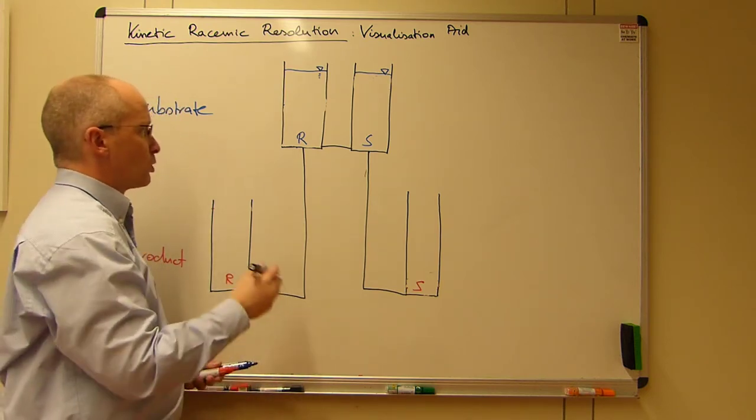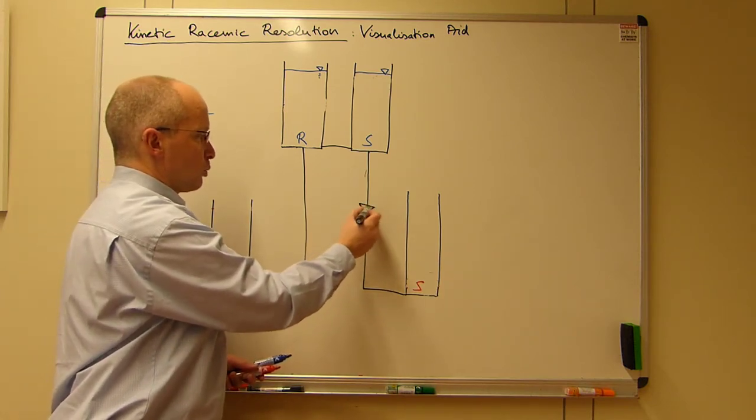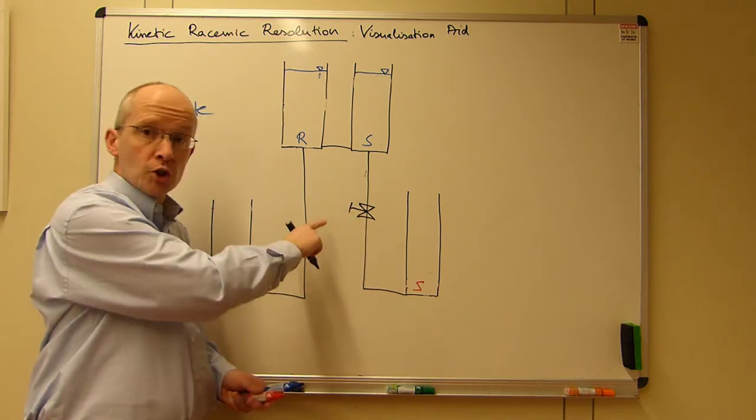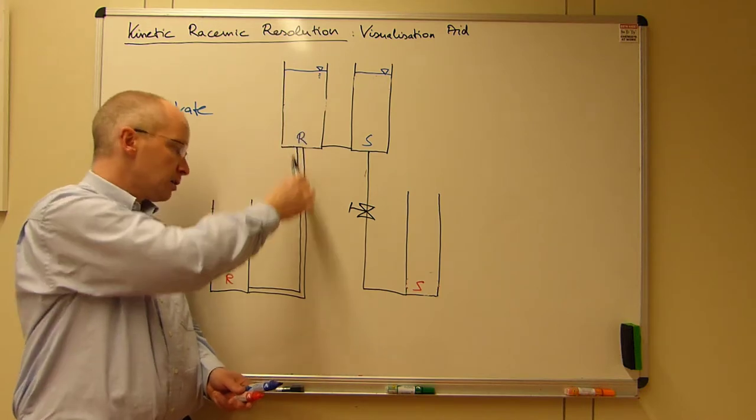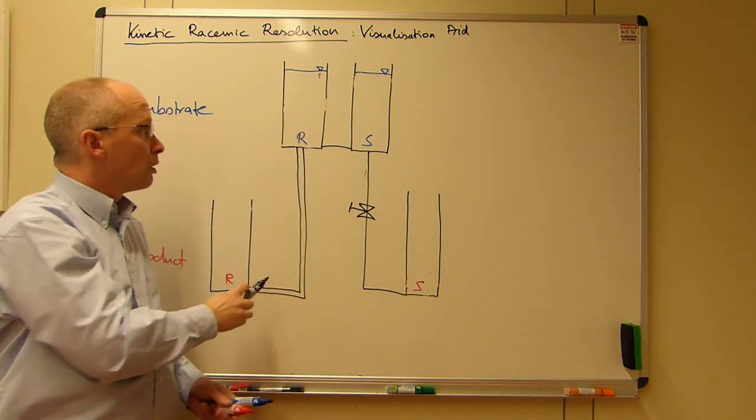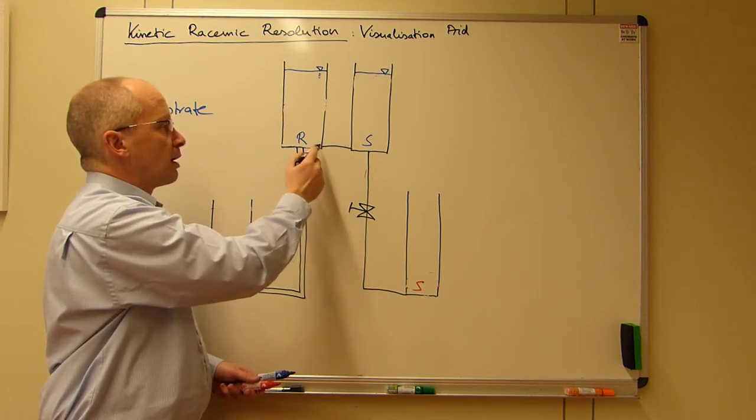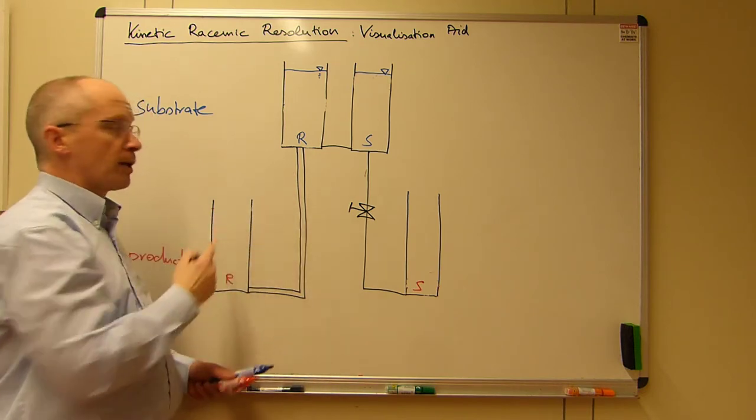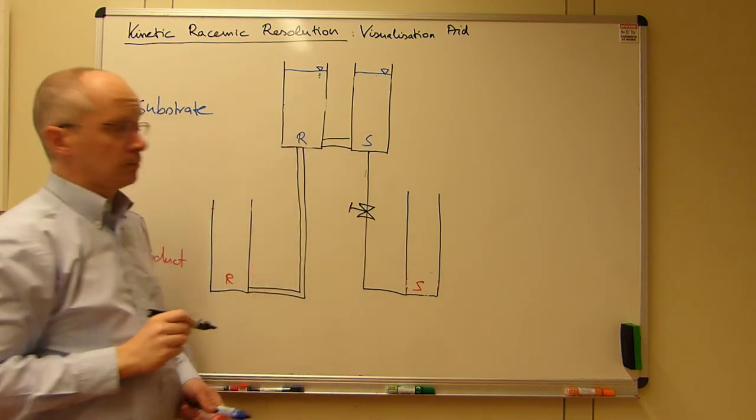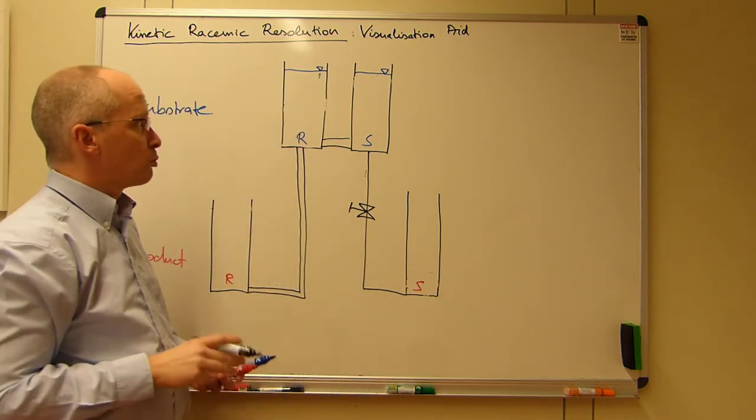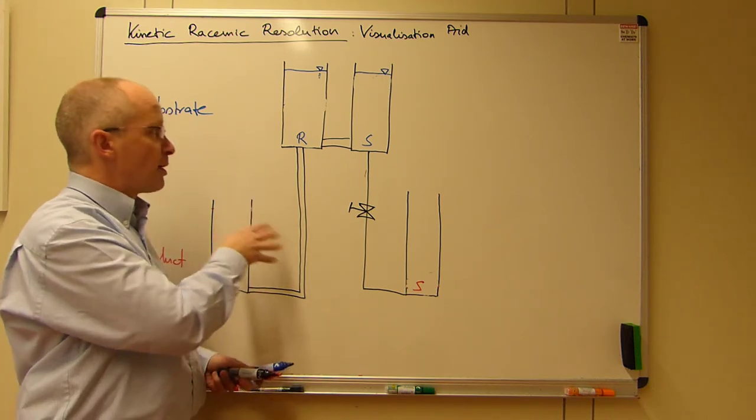That means that S can drain via R to the product R or vice versa. And what you prefer, of course, is that this reaction is non-existent. So we shut that off, then R is drained. And we also want to make this connection here at least as large as the drainage here. Otherwise, this will limit the reaction rate. Yeah? So this would be then the appropriate picture for the dynamic kinetic resolution.